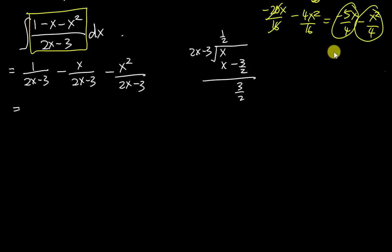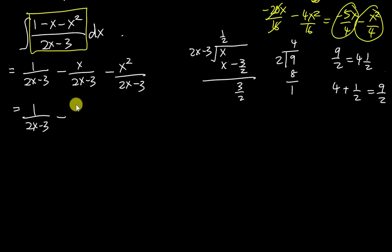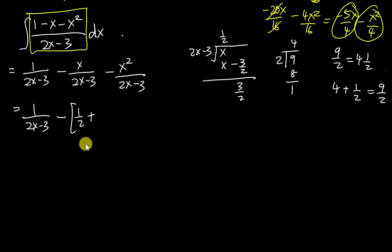This is like converting an improper fraction to a mixed number — for example, 9/2 = 4 + 1/2. So x/(2x-3) = 1/2 + (3/2)/(2x-3), which simplifies to 1/2 + 3/(2(2x-3)).